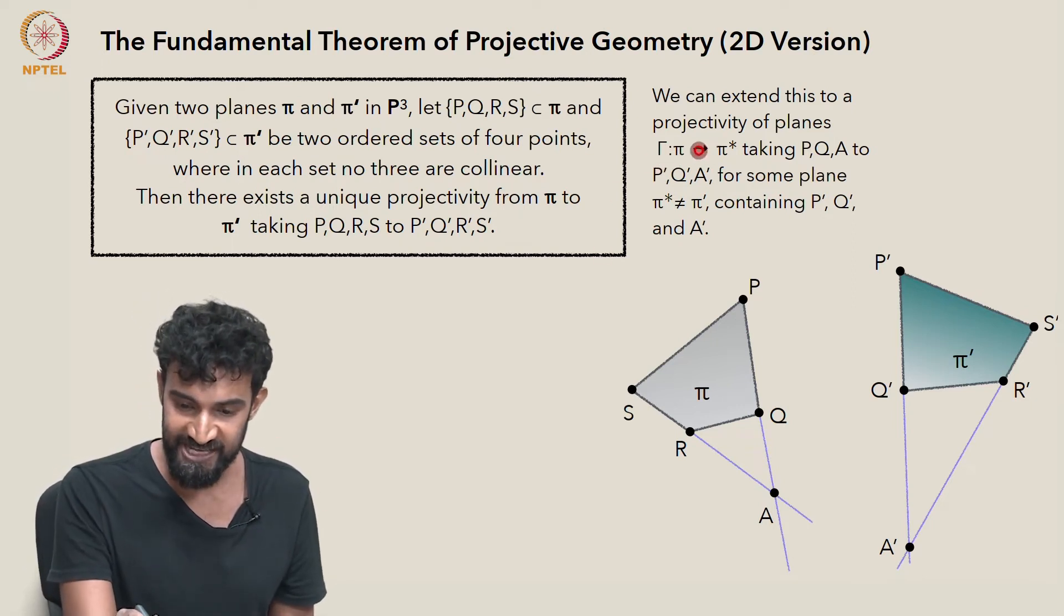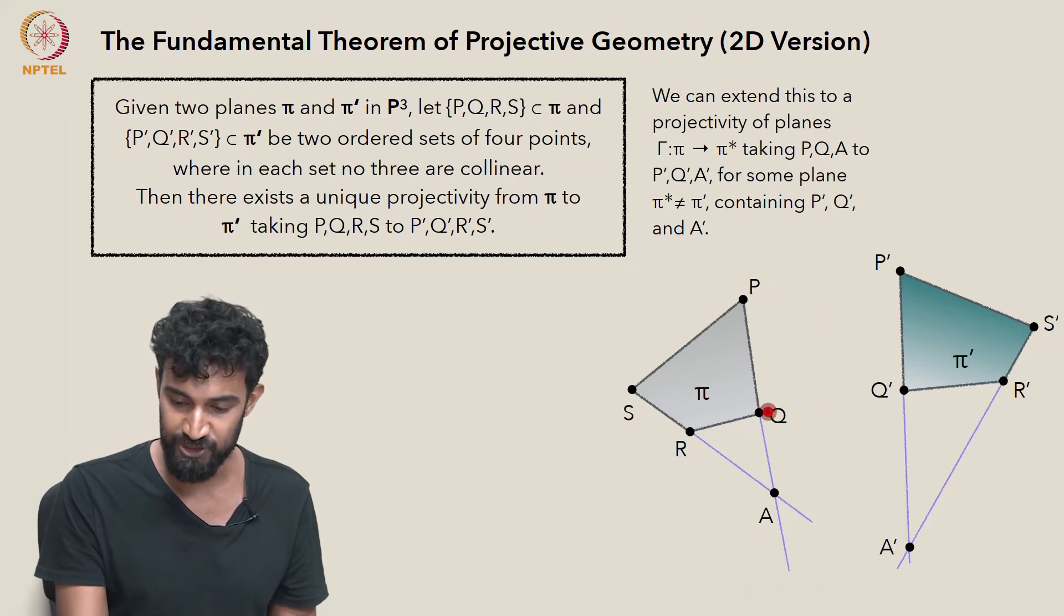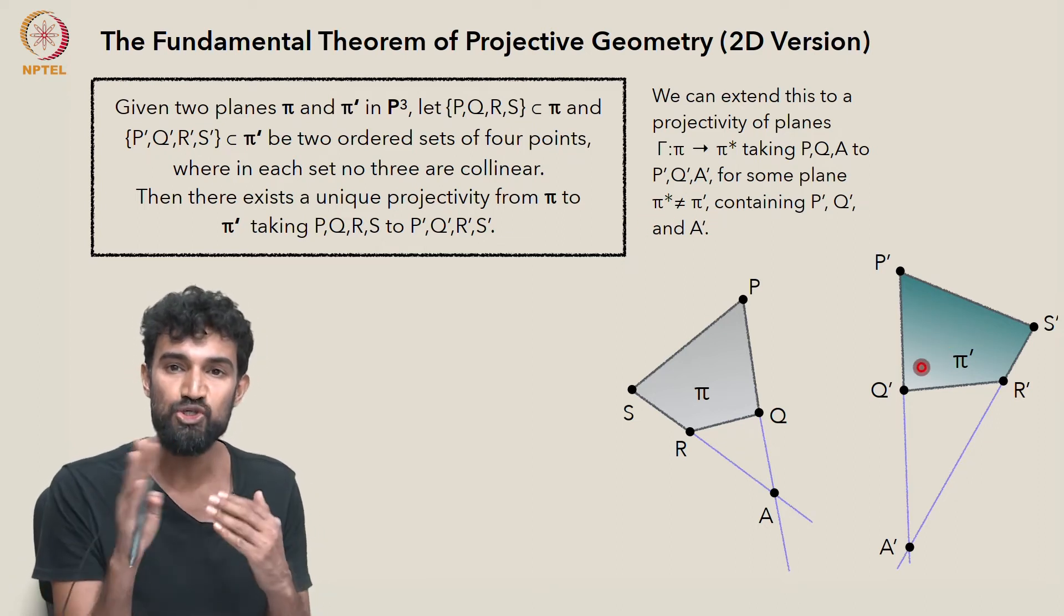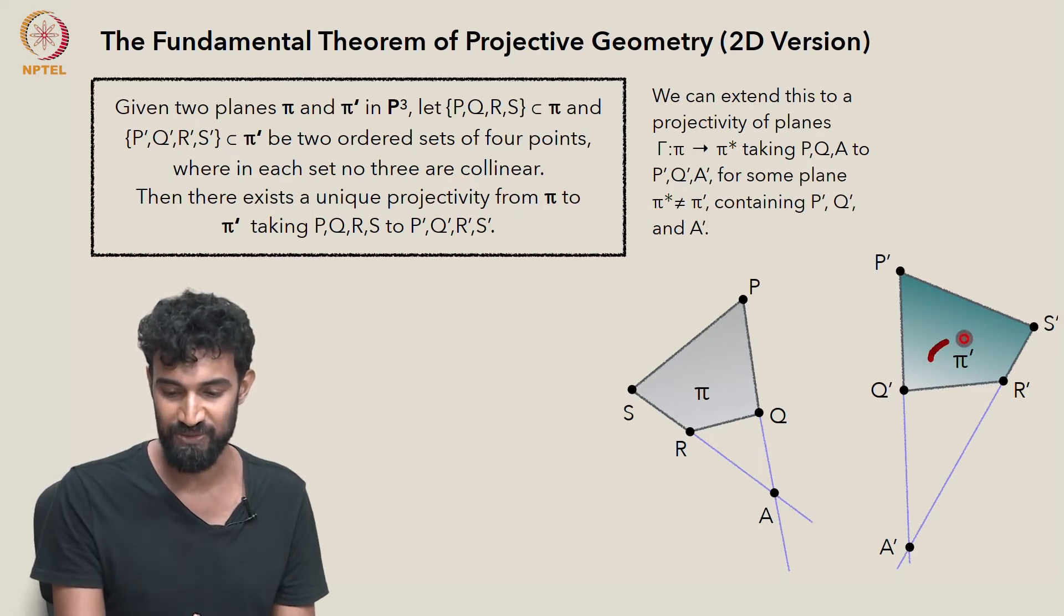Let's take a projectivity of planes gamma from π to some plane π star, and it needs to take P to P prime, Q to Q prime, and A to A prime. And we just want to make sure that π star is not equal to π prime. We have a lot of freedom in choosing those planes, so we can choose the final plane π star such that it's not equal to π prime.